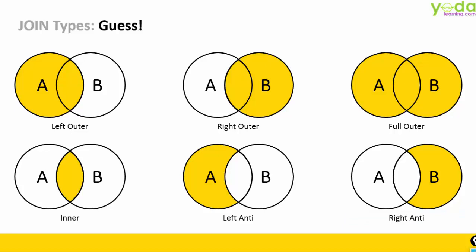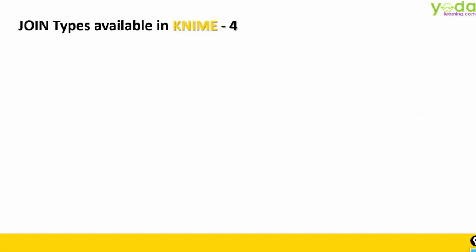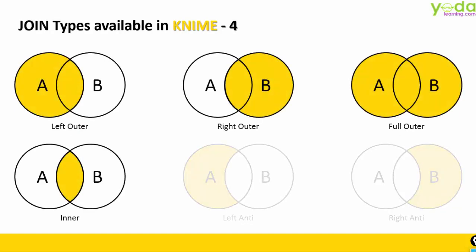If you are going to learn SQL, Alteryx, KNIME, Power BI, Tableau, or any recent data analytics application, you will require the knowledge of join types. In KNIME, there are only four join types available: Left Outer, Right Outer, Full Outer, and Inner Join. Do not be surprised when you do not find the remaining two in KNIME.